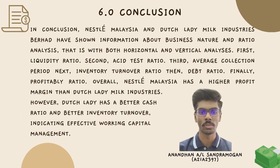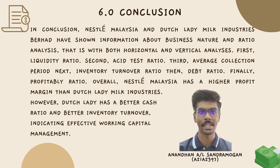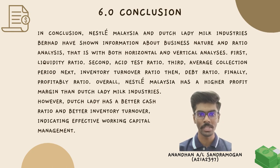Hello, my name is Anandjan Anallaki Sandramangan, my matrix number is 821-82397. Today I am going to present our overall financial management conclusion. In conclusion, Nestlé Malaysia and Dutch Lady Industries Berhad have demonstrated key information about business nature and ratio analysis, with both horizontal and vertical analysis. The analysis covered liquidity ratio, acid test ratio, average collection period, inventory turnover ratio, debt ratio, and profitability ratio. Overall, Nestlé Malaysia has a higher profit margin than Dutch Lady Industries. However, Dutch Lady has a better cash ratio and better inventory turnover, indicating more effective working capital management. That's all from me. Thank you.